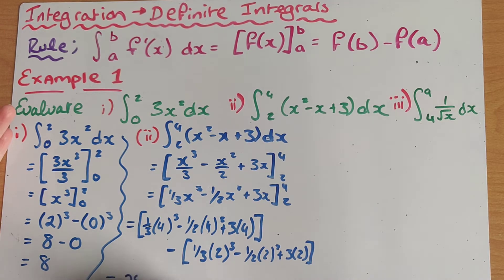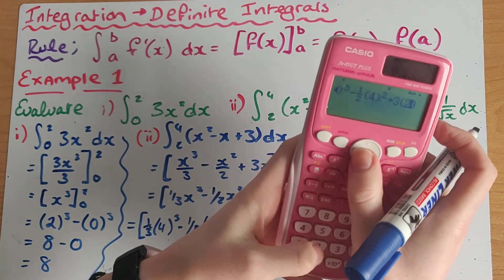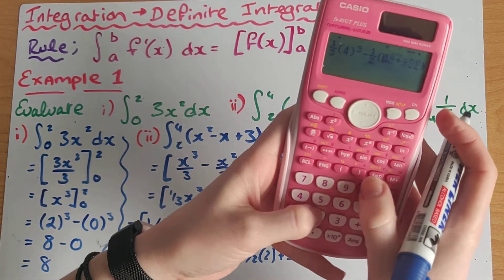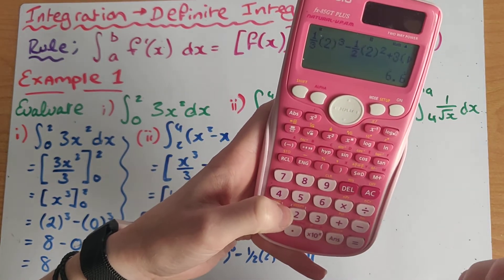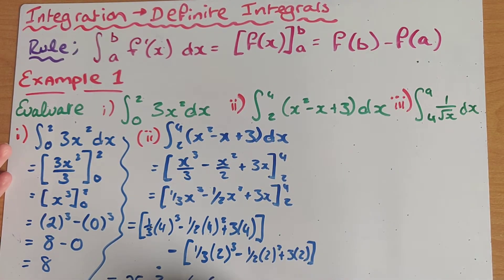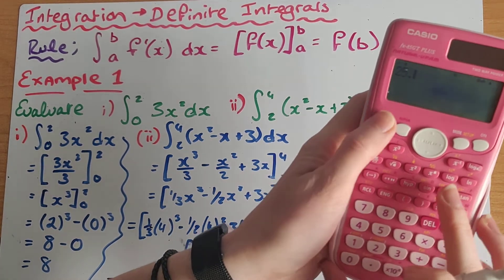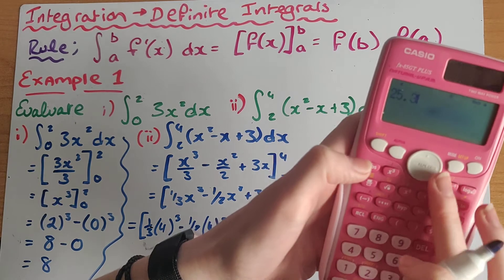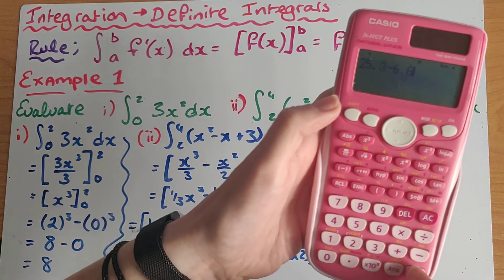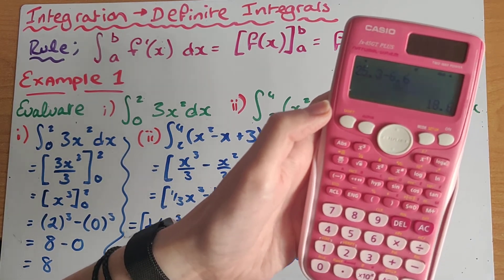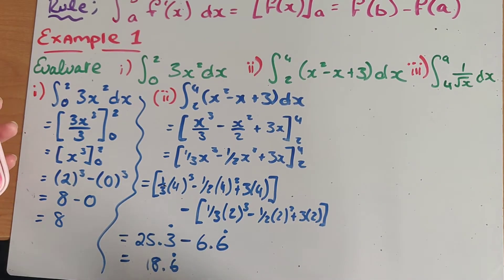So I have 25.3 recurring, minus — and now I go back and change my four to a two — which equals 6.6 recurring. So now I'm going to type that into my calculator. I press shift and the x² button to get the recurring notation. So I have 25.3 recurring minus 6.6 recurring, which equals 18.6 recurring as my definite integral for this answer.